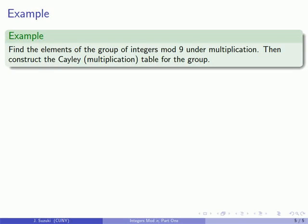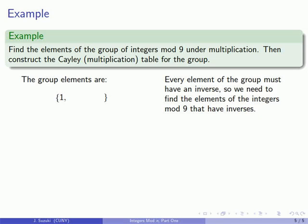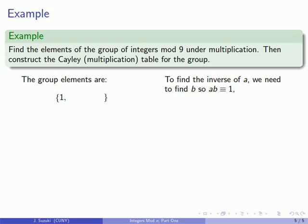So let's see if we can form the Cayley table for the group of integers mod 9 using the operation of multiplication. Now first of all a group must include the identity and since the operation is multiplication our identity is going to be 1. And because every element of a group must have its inverse then I can only include an element a if I can find its inverse b. In other words ab has to be congruent to 1.